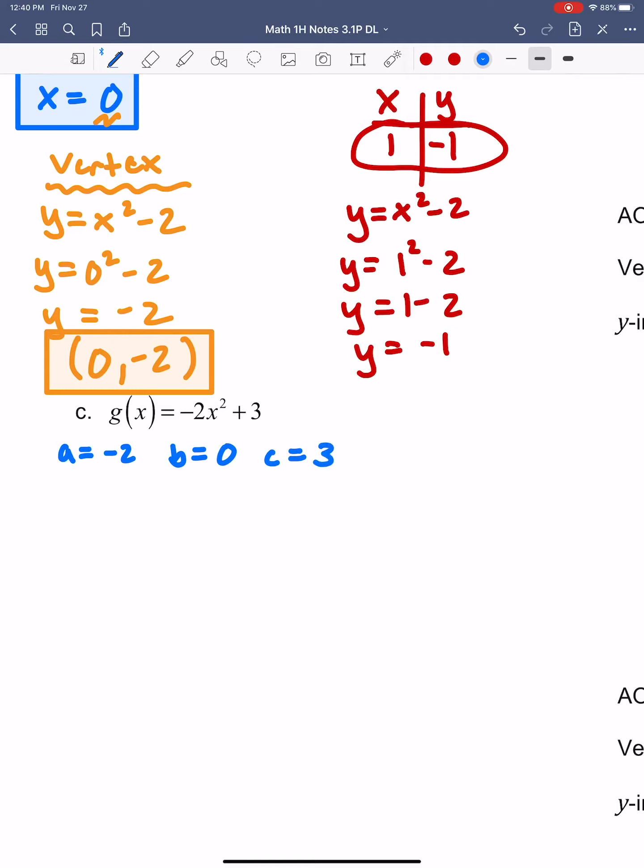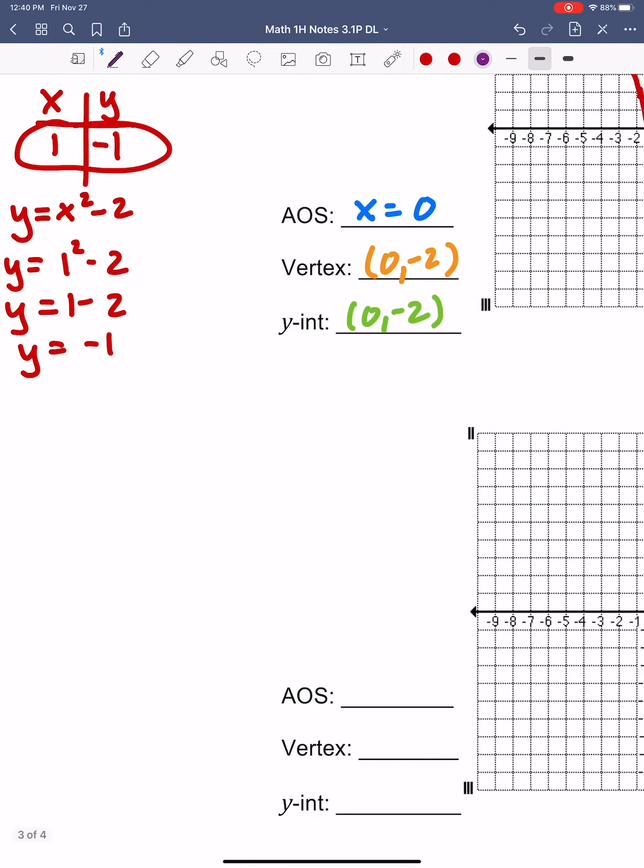All right, so then I can go ahead and find the axis of symmetry, the AOS, using our formula here. AOS: X equals negative B over 2A. That's going to be negative 0 over 2 times negative 2. And since 0 is in the numerator, that's going to turn into 0 again.